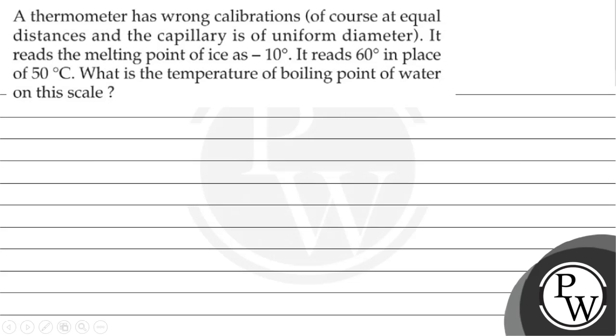Hello Bacho. So let's see the question. The question says that a thermometer has wrong calibration, of course at equal distance, and the capillary is of uniform diameter. It reads the melting point of ice as minus 10 degrees Celsius. It reads 60 degrees in place of 50 degrees Celsius. So what is the temperature of boiling point of water on this scale?